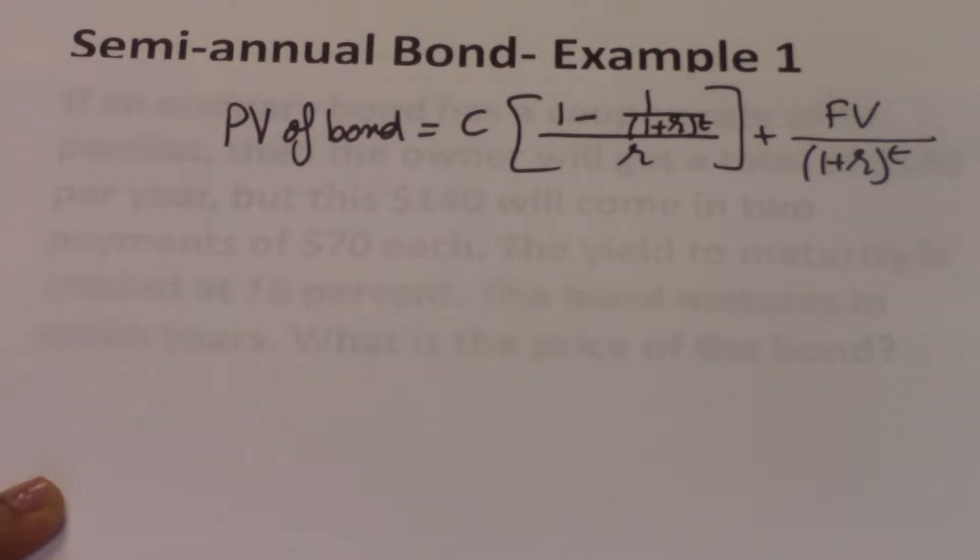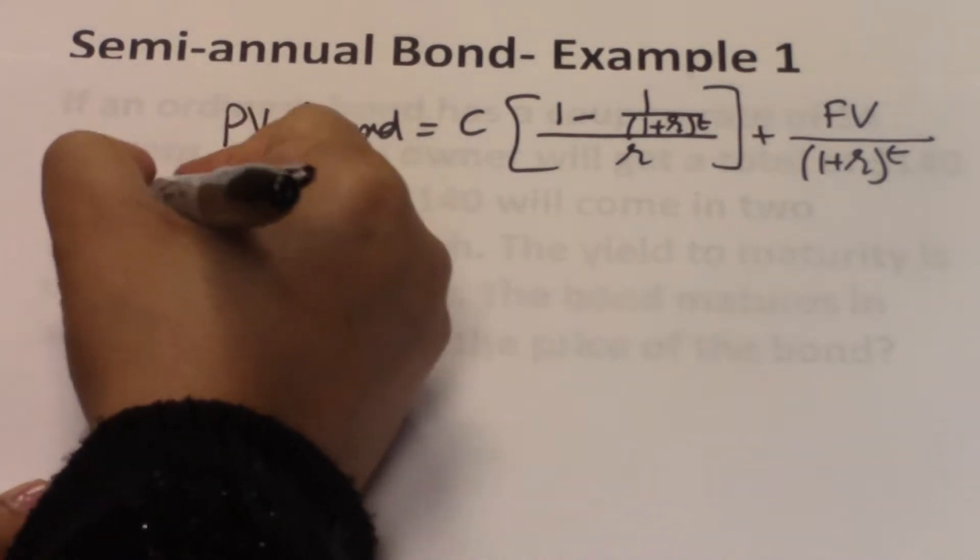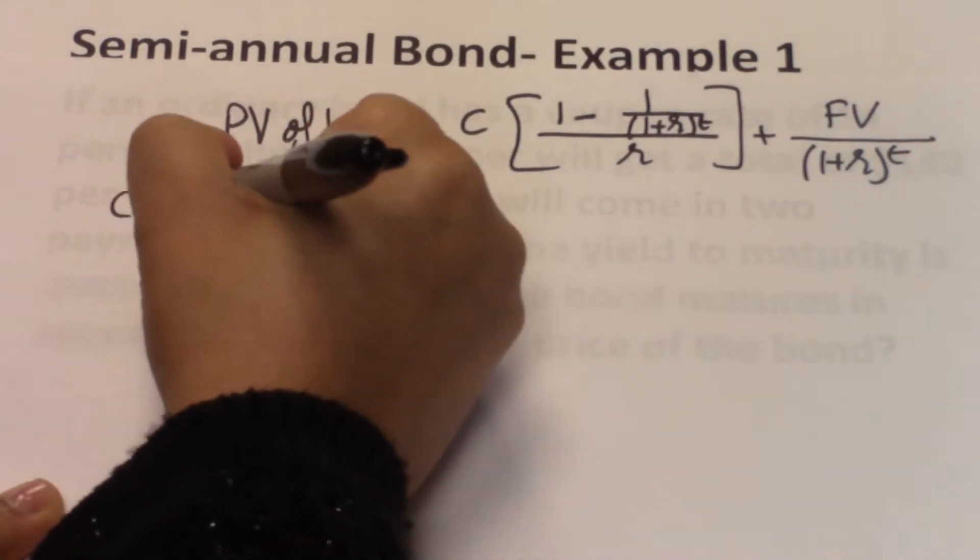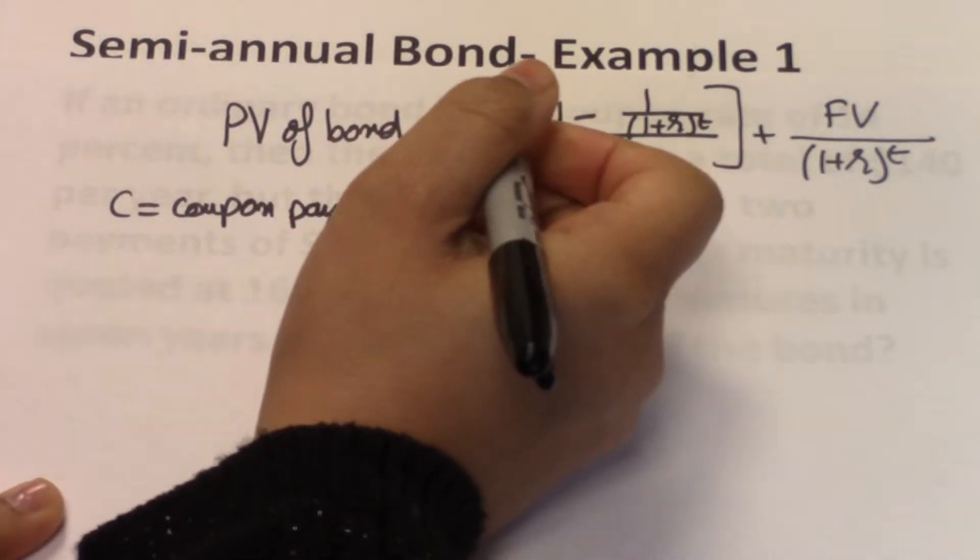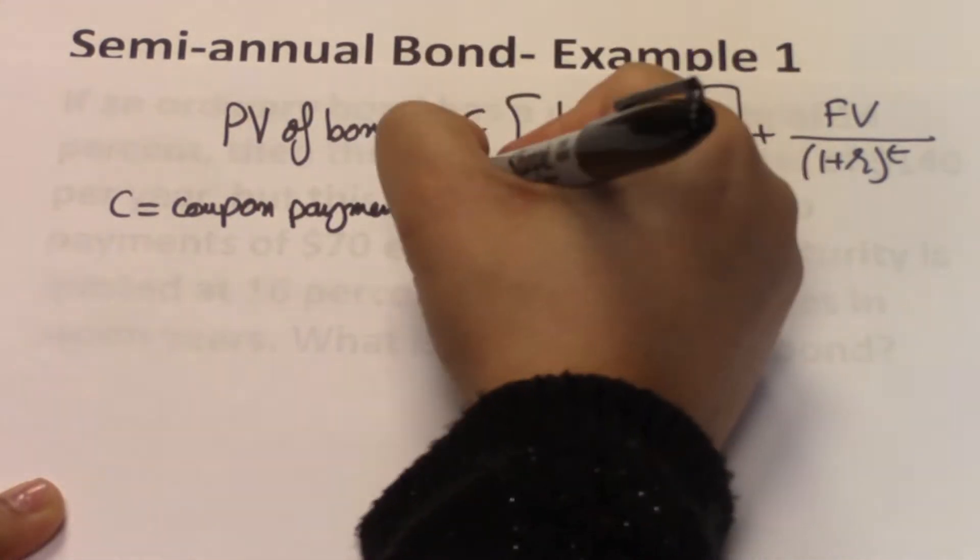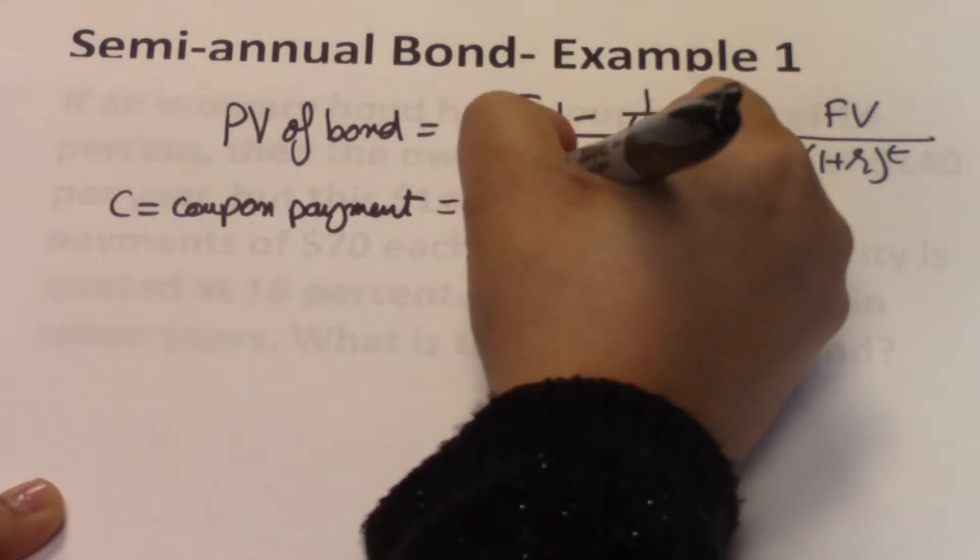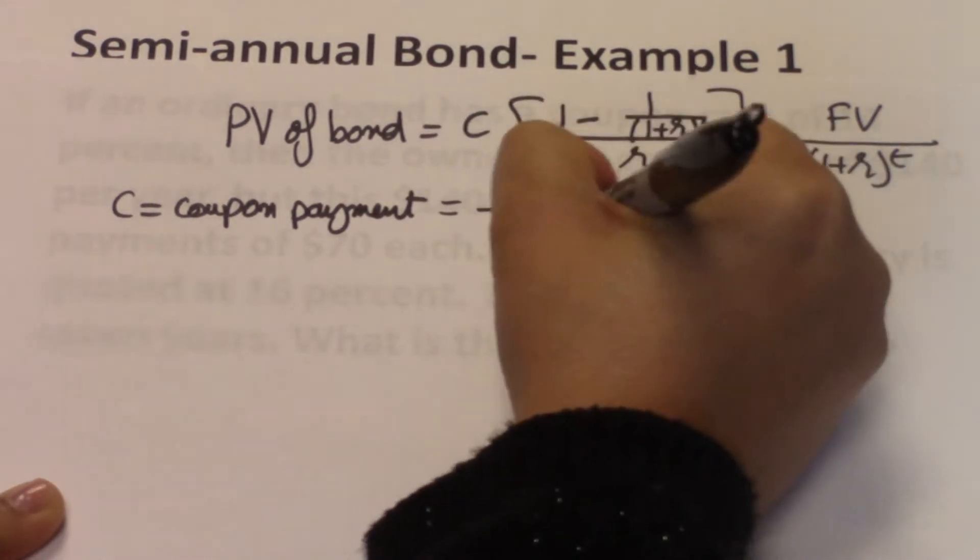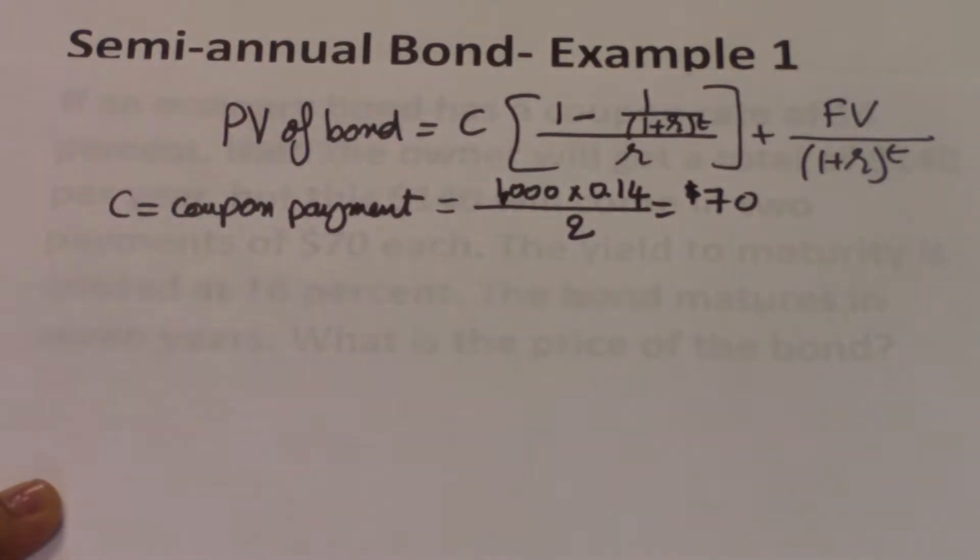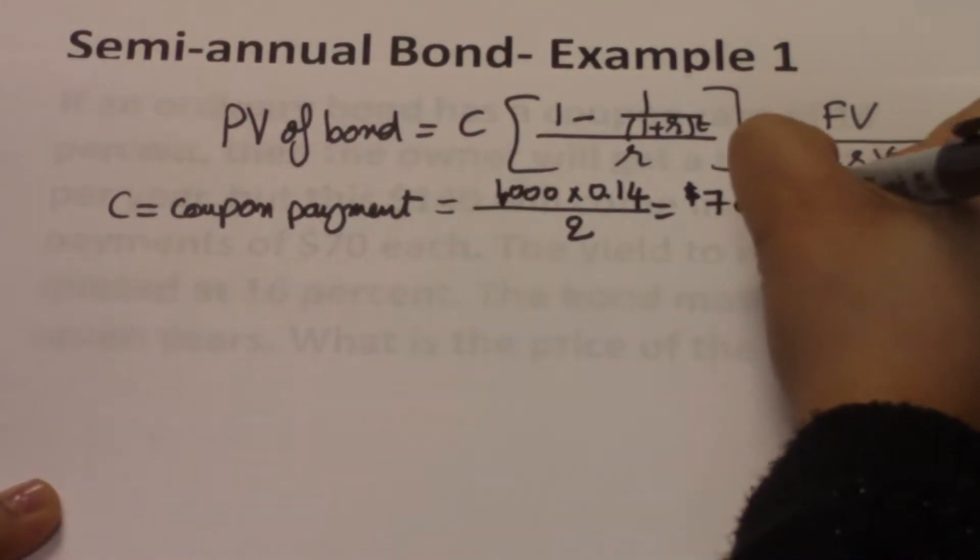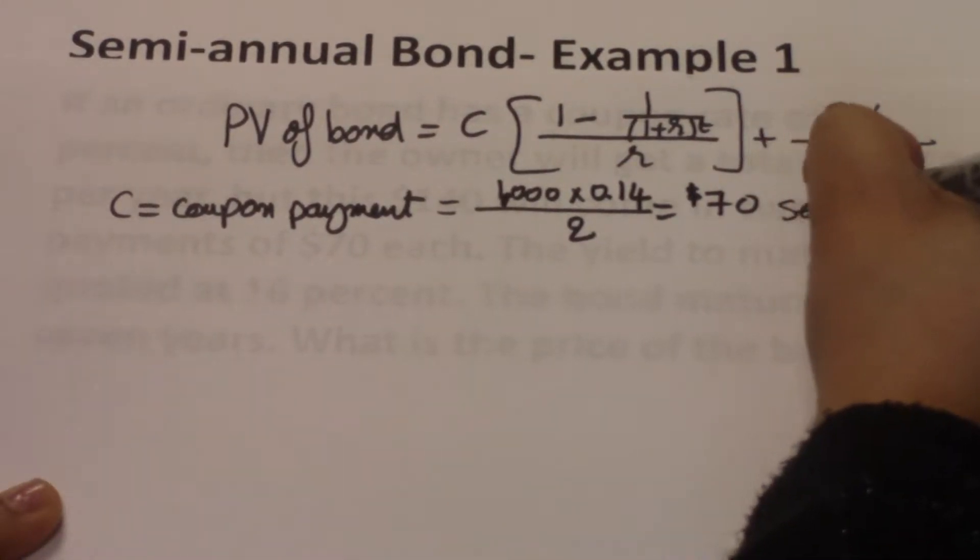Here, everything that we are going to input is going to be on a semi-annual basis because C is a semi-annual number. So C equals to the coupon payment. And the coupon payment here is basically the 1,000 times the coupon rate of 0.14 divided by 2. And this will give us a coupon payment of $70 that you get every six months. So this is $70 that is semi-annual.